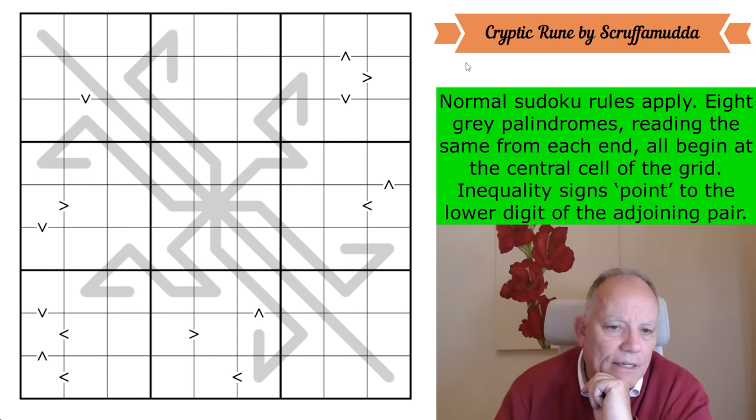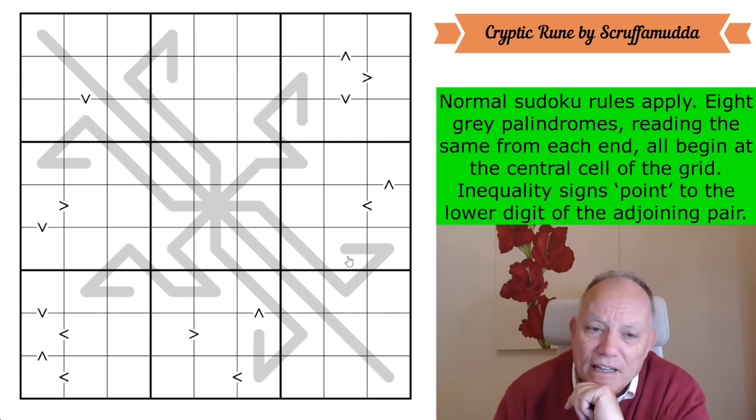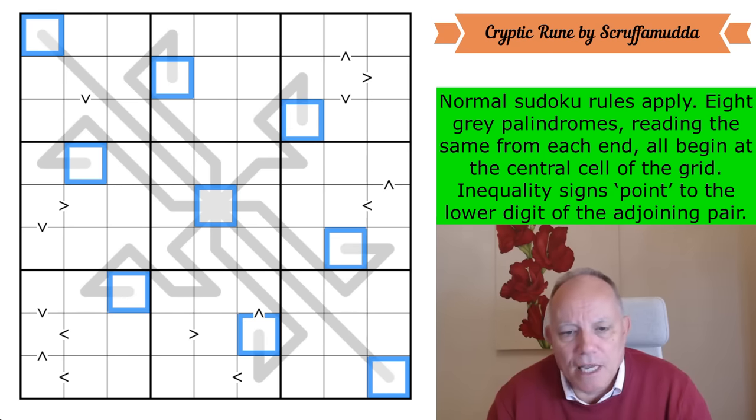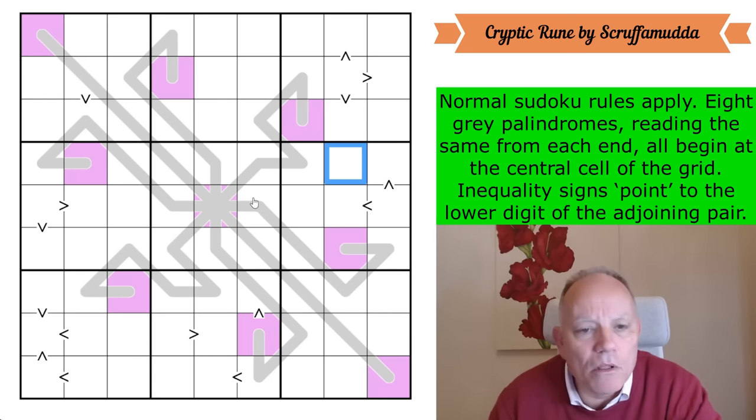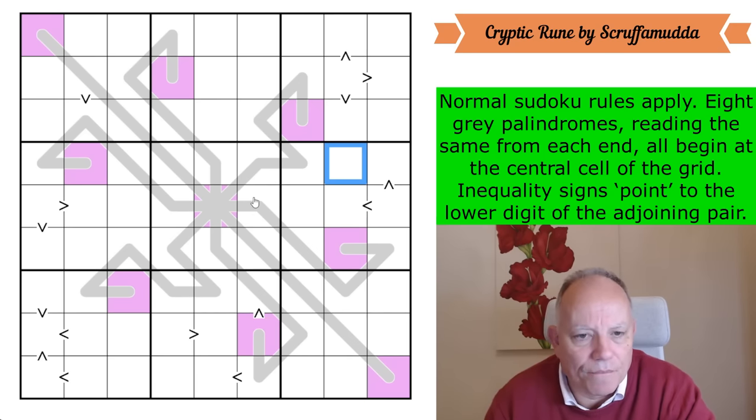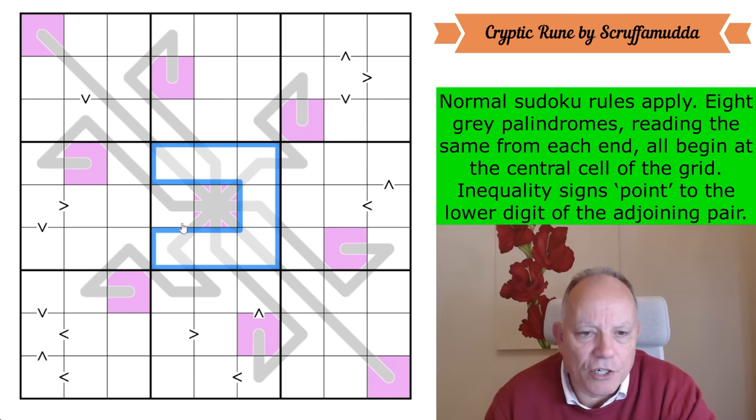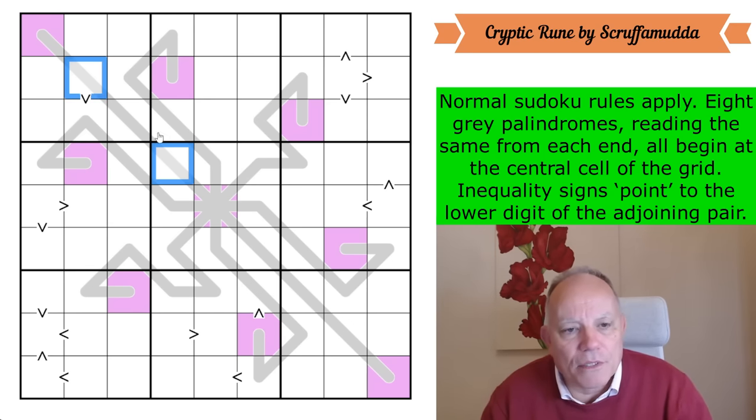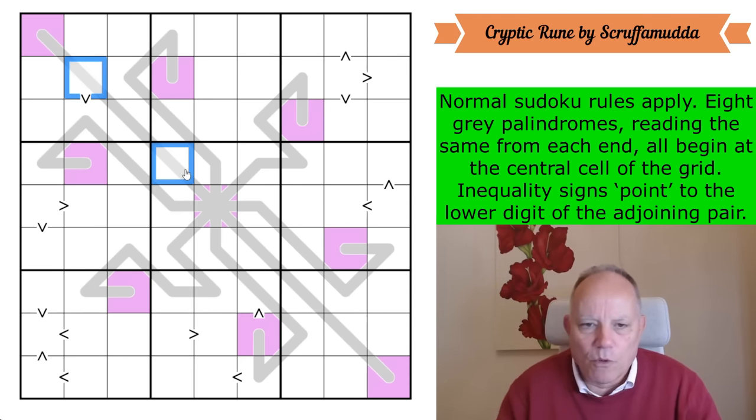My idea is that we're going to probably colour pretty much the whole grid. Let's use this palindrome rule to the tips. Given that these are palindromes and read the same either way, they have the same digits at the beginning, which is the centre of the puzzle, and the end, which is all the tips. So those are all the same colour. I think that there is a fair chance we're going to colour the whole grid before we can do any numbers.